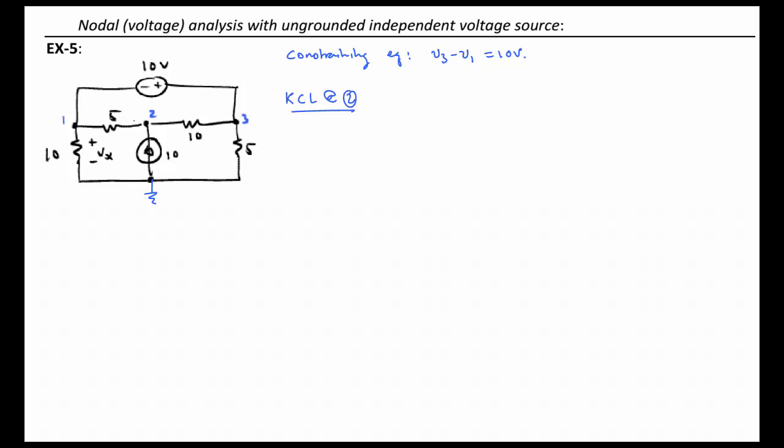We're going to look at current leaving the 5 ohm resistor. That's going to be V2 minus V1 times 0.2 mhos minus 10 amps, and then we'll have 0.1 times V2 minus V3. That's the current leaving to the right. All of that is equal to 0.